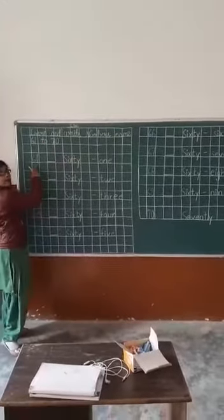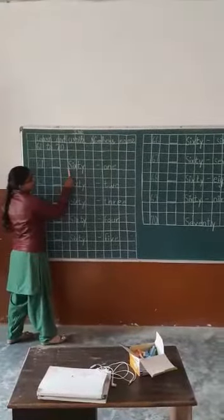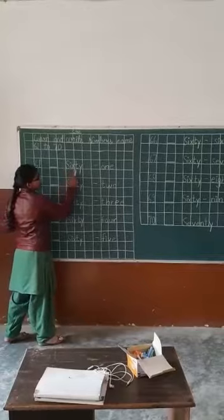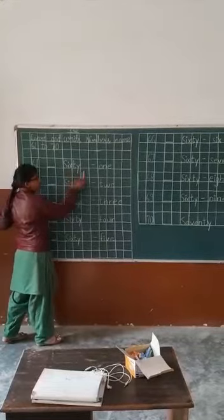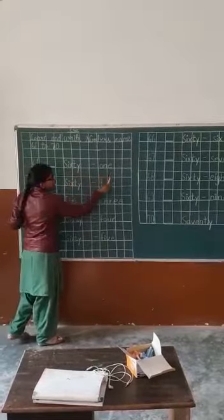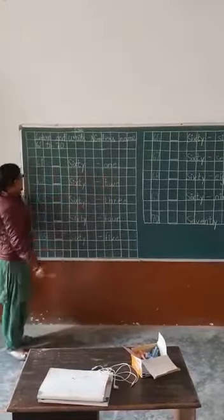61. Spelling: S-I-X-T-Y, sixty, O-N-E. 61.